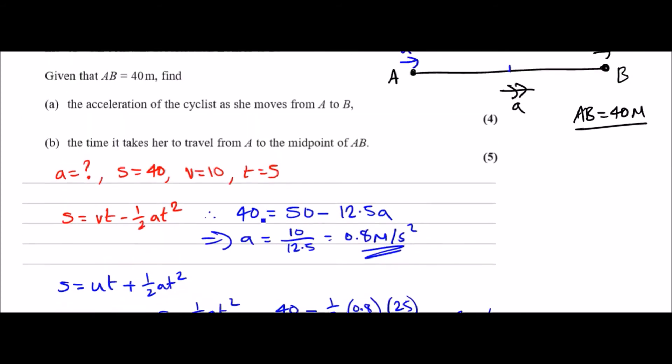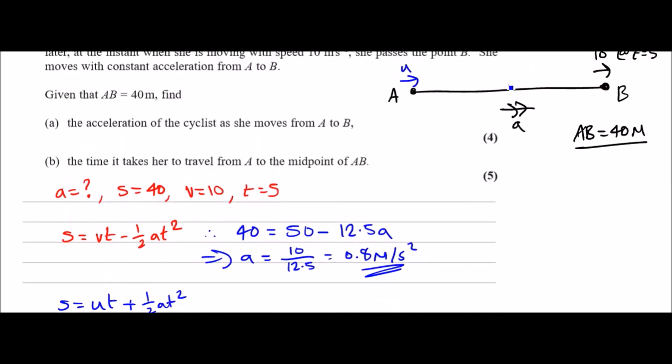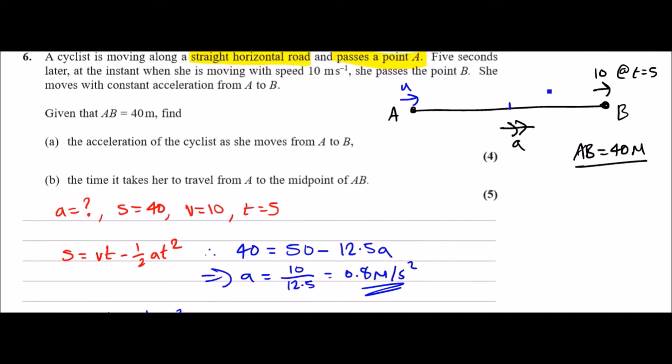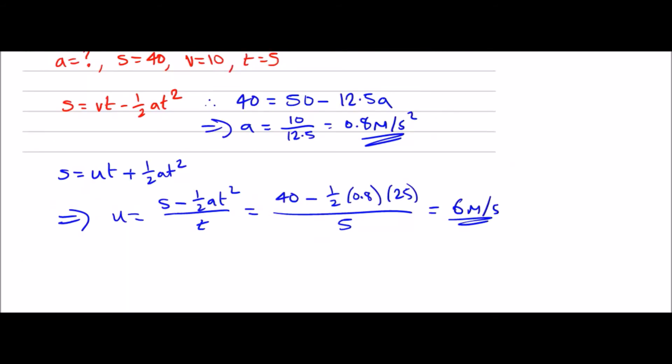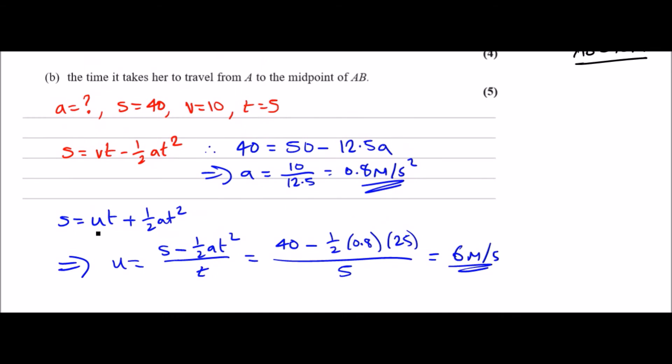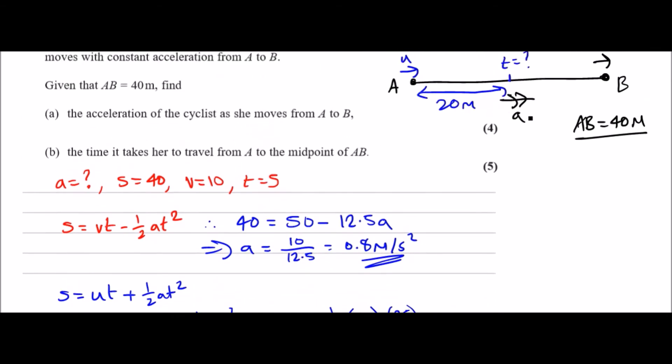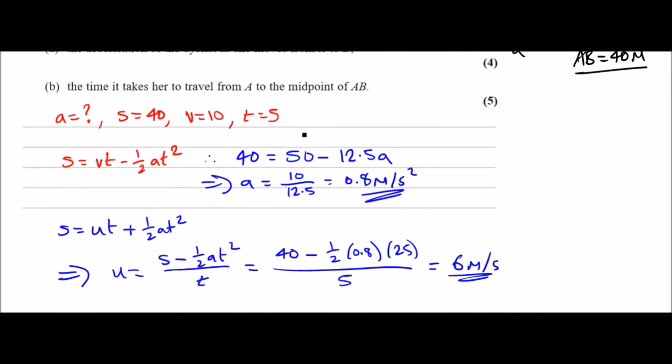Now we've got the initial speed, we can find out the new time it takes to get to the midpoint. To get to the midpoint it's 20 meters long, and we need to find the time to get there. We could use the initial speed, the acceleration because it's constant throughout the whole journey, we know s is 20. In terms of equations to use you've got quite a few options, but I'm going back to use the same equation because we have u which is 6, we have s is 20, we have a, and we need t.